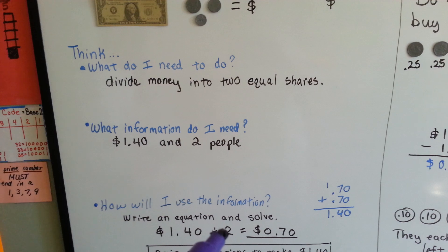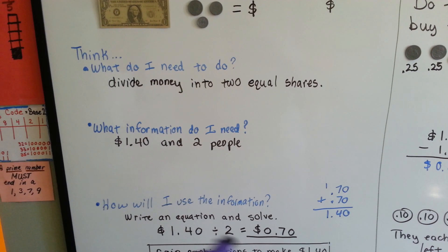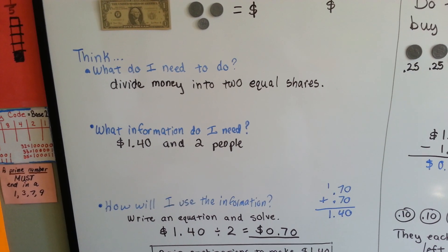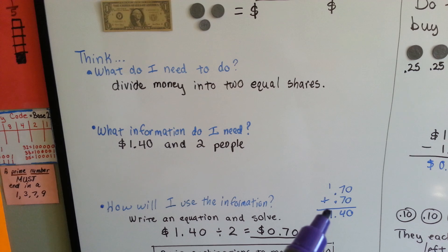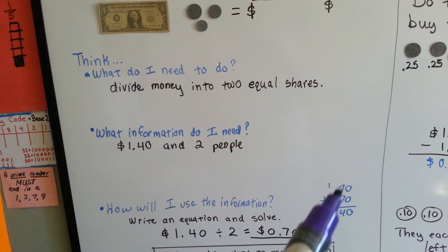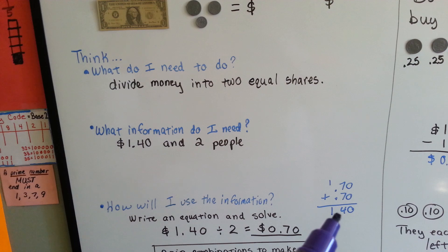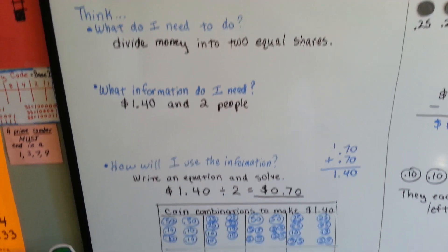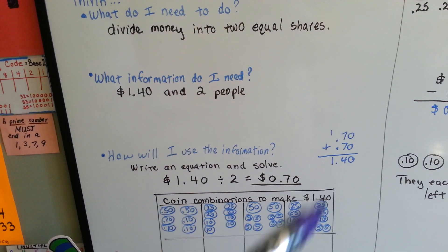Well, a dollar forty divided by two. It comes out to seventy cents each because seventy cents and seventy cents equals a dollar forty. See? The zero and then seven plus seven is fourteen. We carry the one, put the four down, and then the one drops down. And then we put the decimal point directly below it.